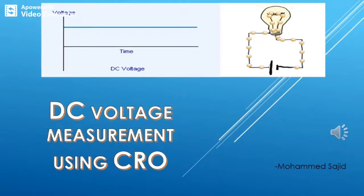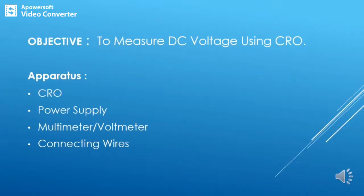In this video we will learn how to measure DC voltage using CRO. CRO means cathode ray oscilloscope. DC means direct current, and AC means alternating current. In DC, the direction of current is not changing — current flows from positive towards negative in one direction only. If we have a regulated power supply, the graph of voltage versus time will be a straight horizontal line.